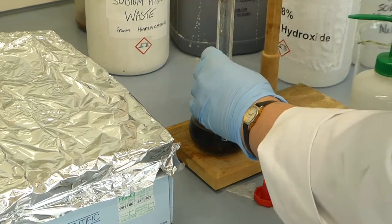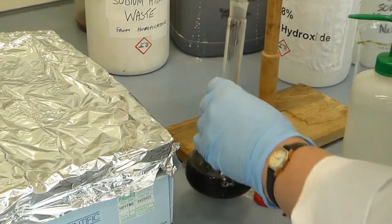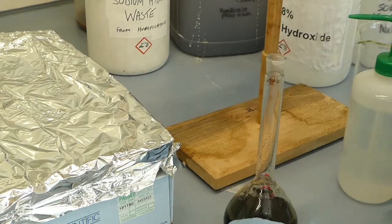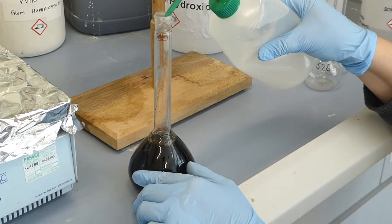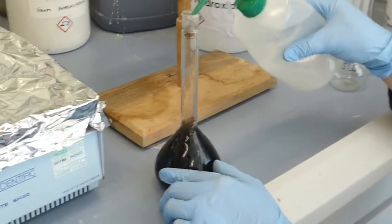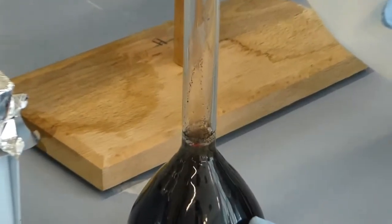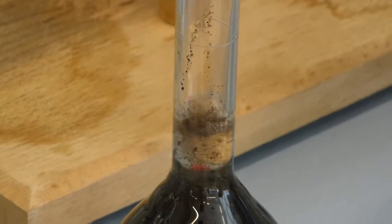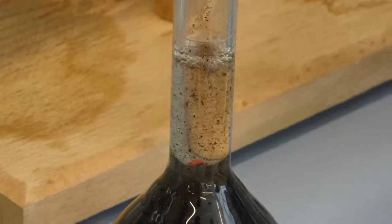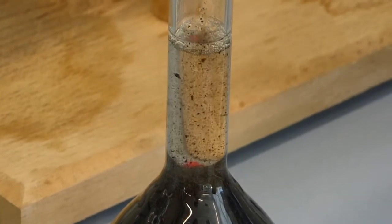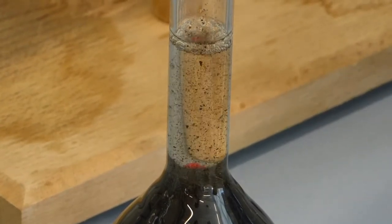Once you've poured through all your sample, you then want to fill the flask up to the 200 ml line with distilled water. You want the base of the meniscus to be on top of the line.